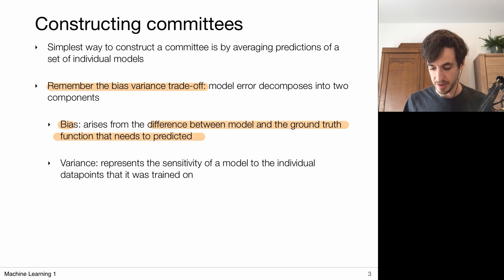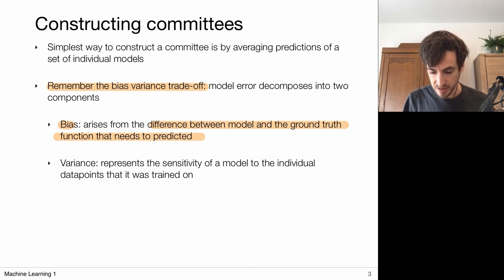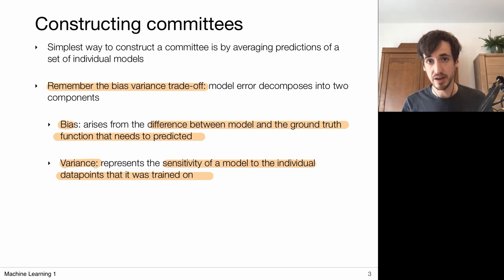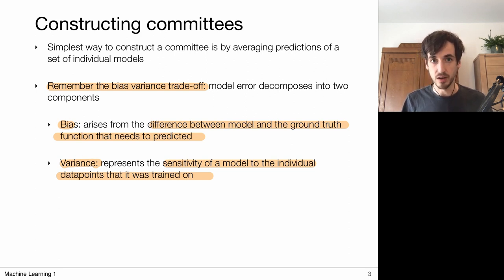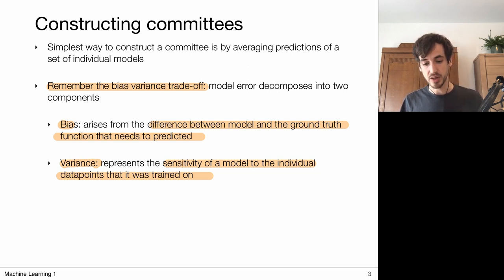If I have a very simple model, I probably have a large bias because my models will be different from the true, very complicated model. But this is balanced against a variance term, which represents the sensitivity of a model to the individual data points it was trained on. If I train a model on one dataset and then again on a different dataset, the models can look completely different — that's high variance. Ideally, we want both bias and variance to be low: a good approximation of ground truth, but also models that don't change drastically with slightly different data.